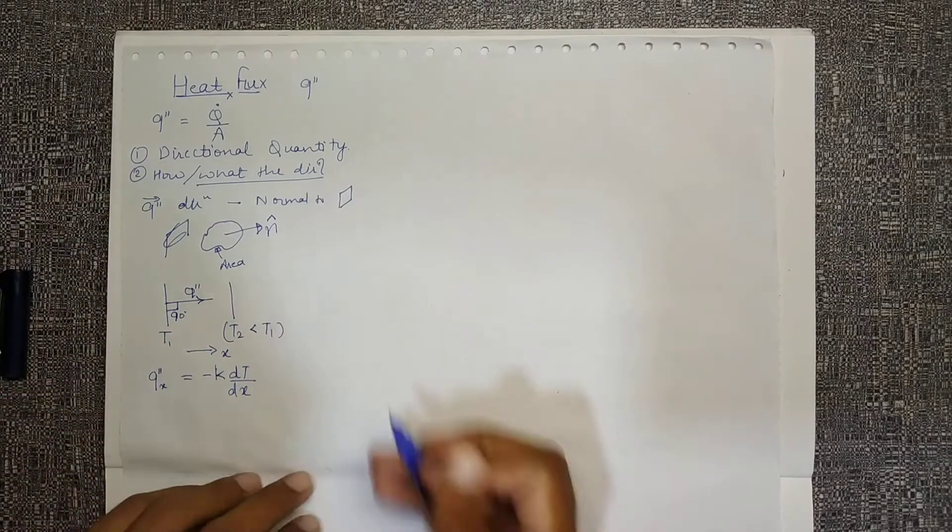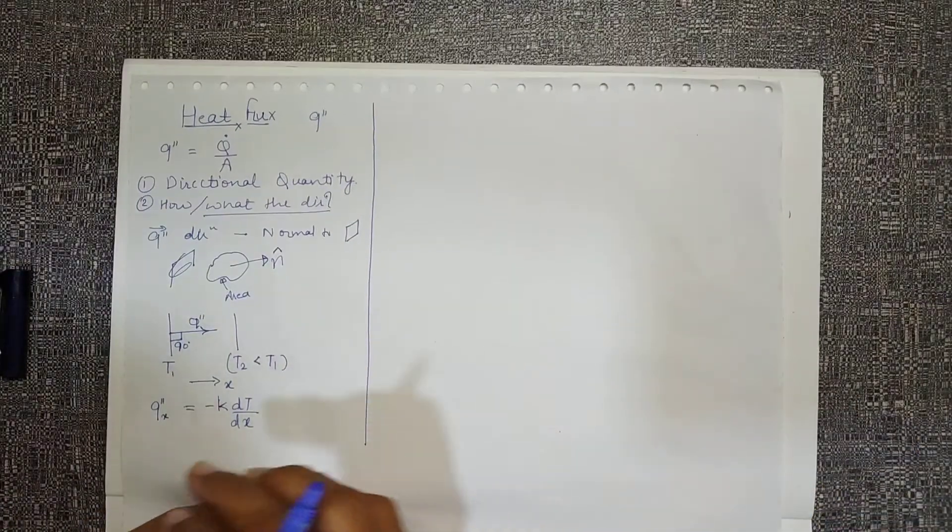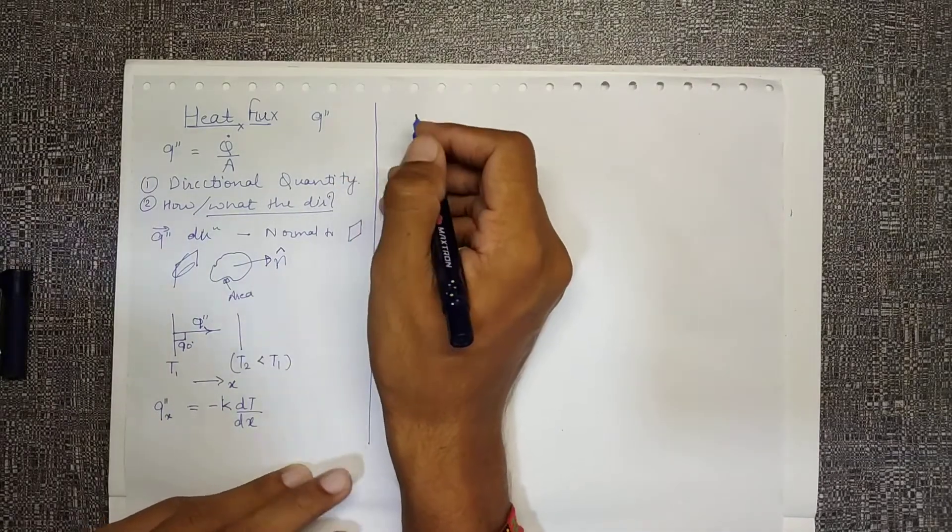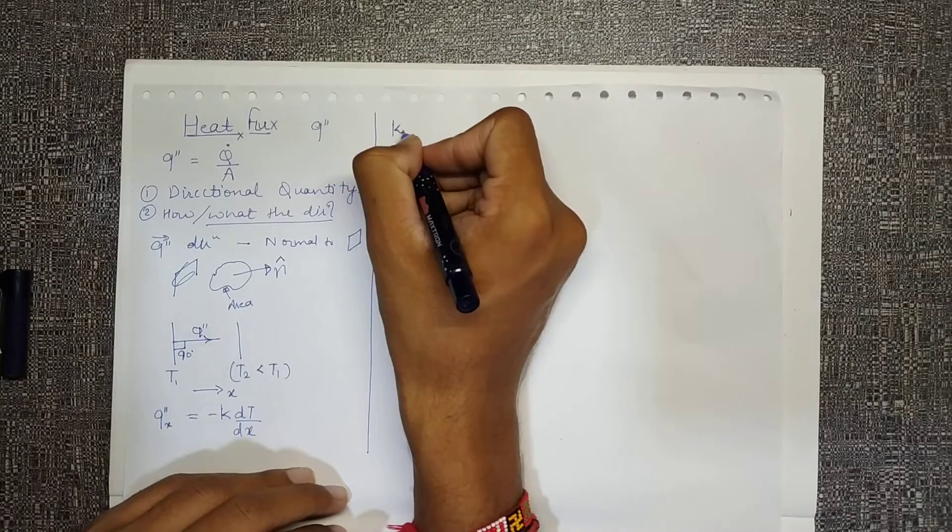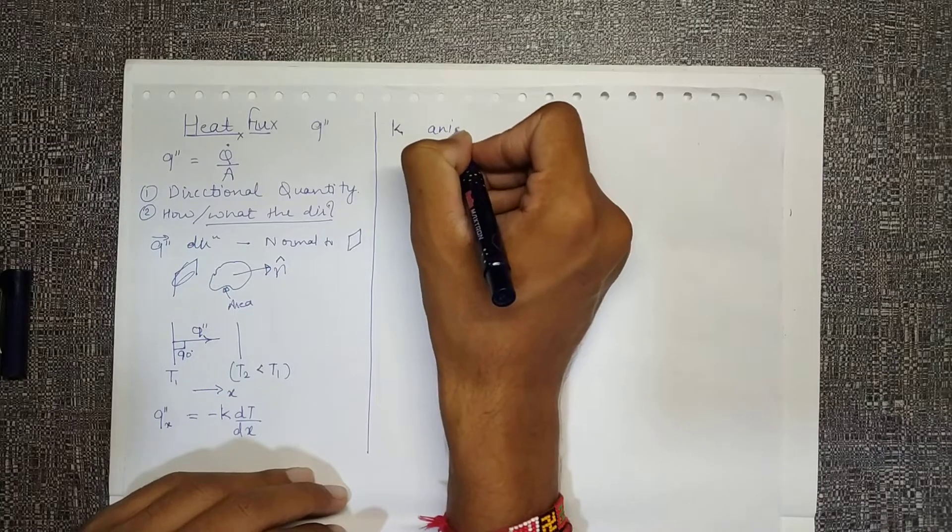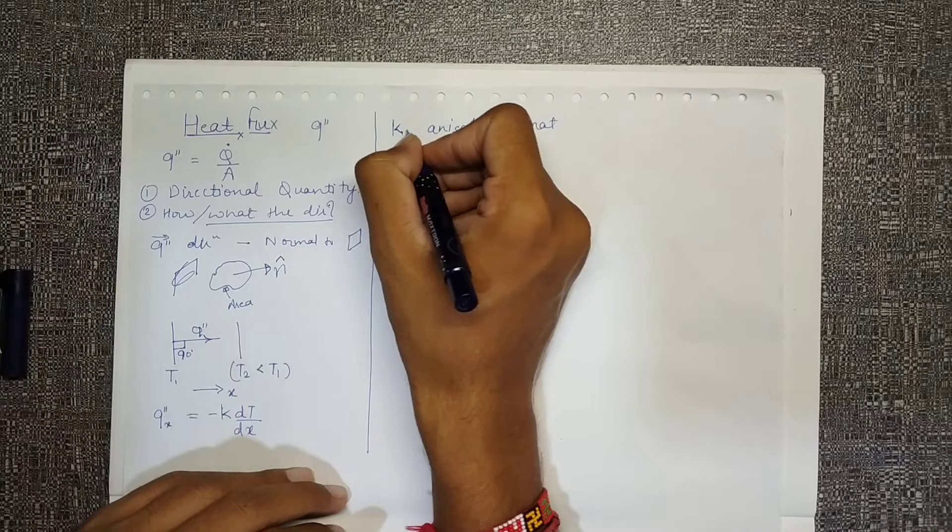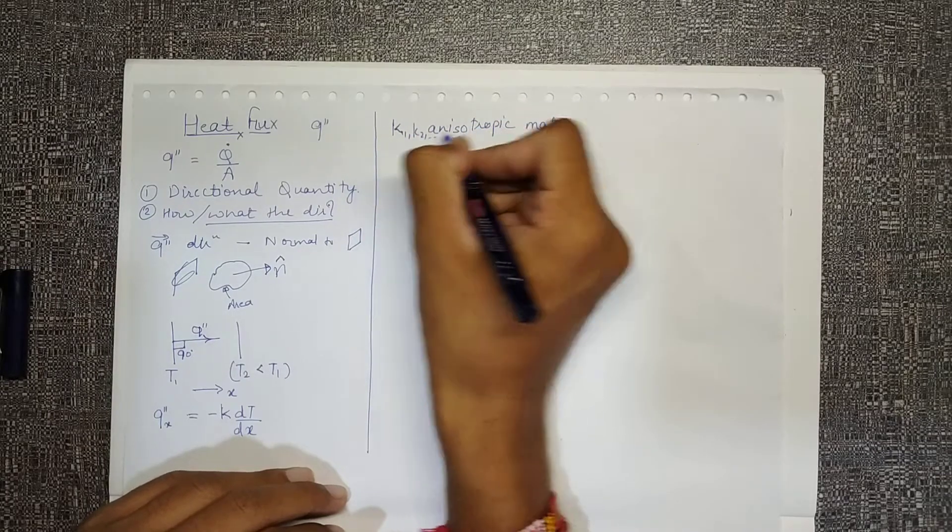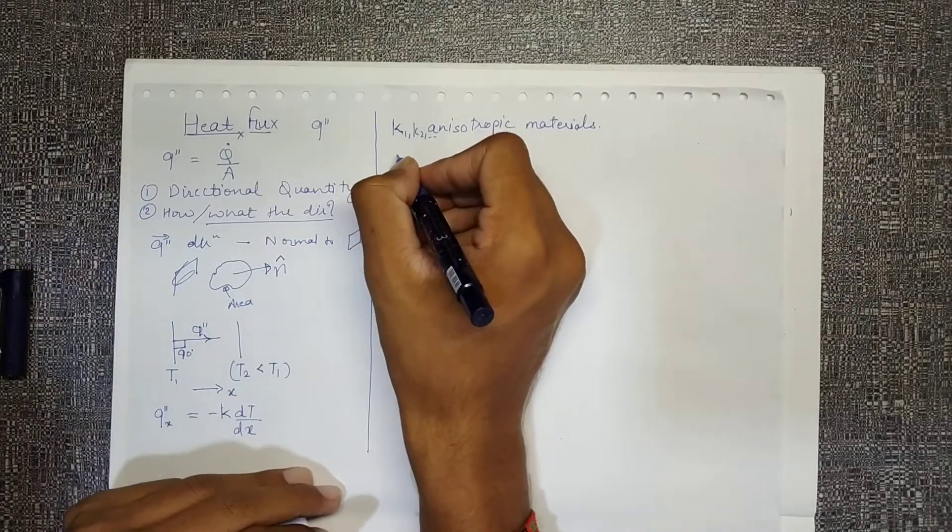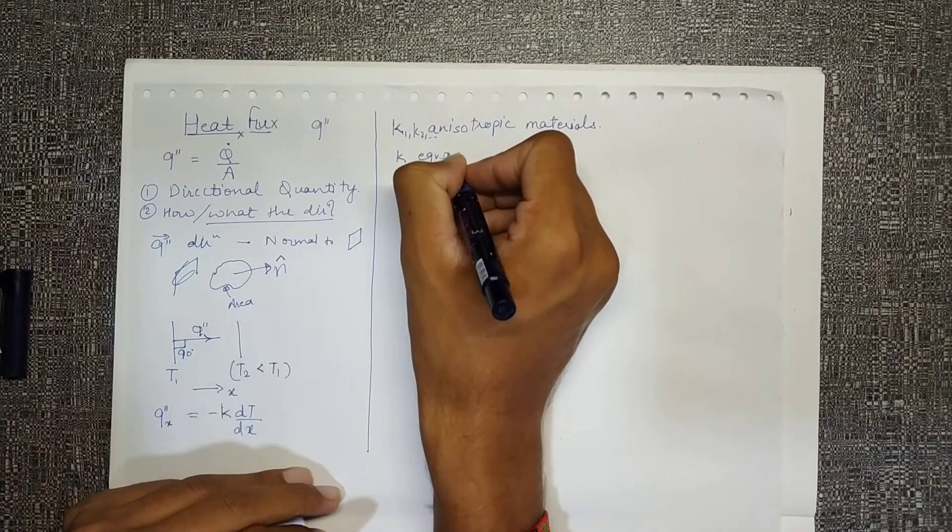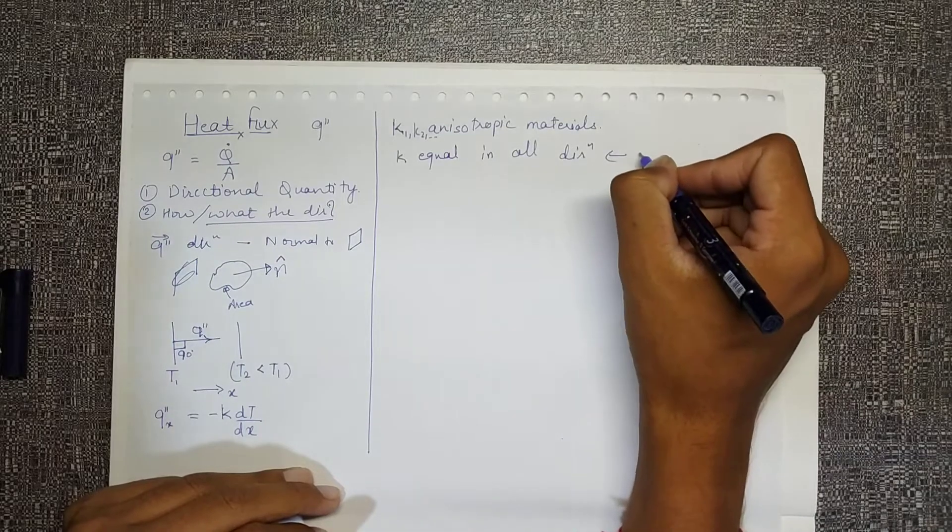My k value has not been taken much of a special consideration as yet, so we'll think what the k value should be. K value may be different for anisotropic materials. Over here we'll have k1, k2, etc. for anisotropic materials, but for isotropic materials there is only one k, equal in all directions. Then it is said we have isotropic material.